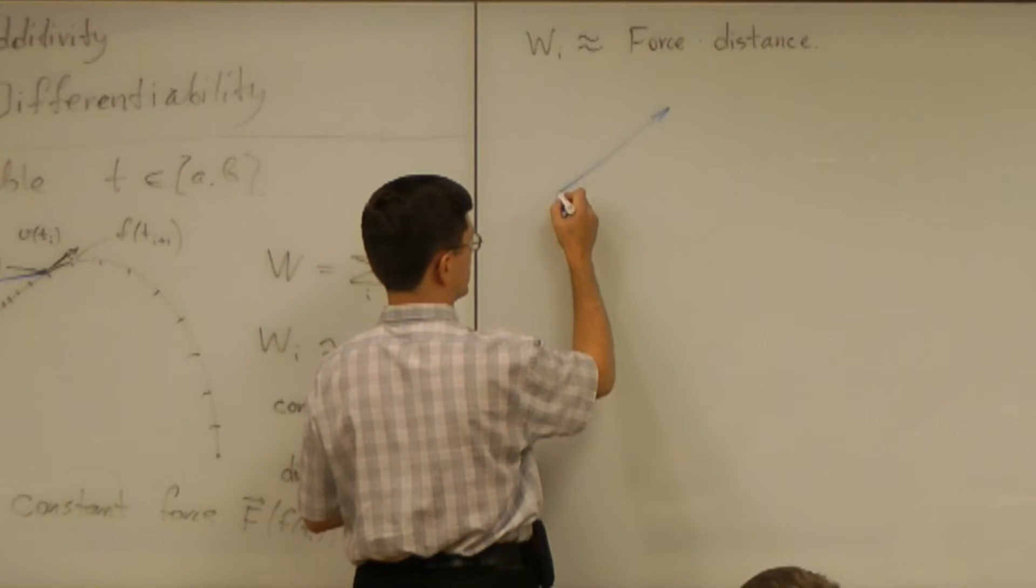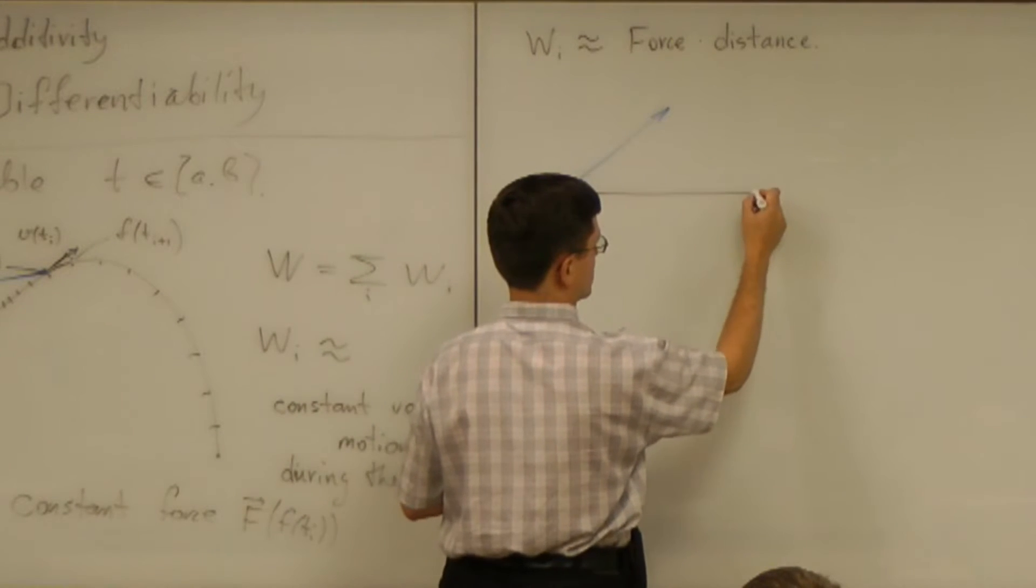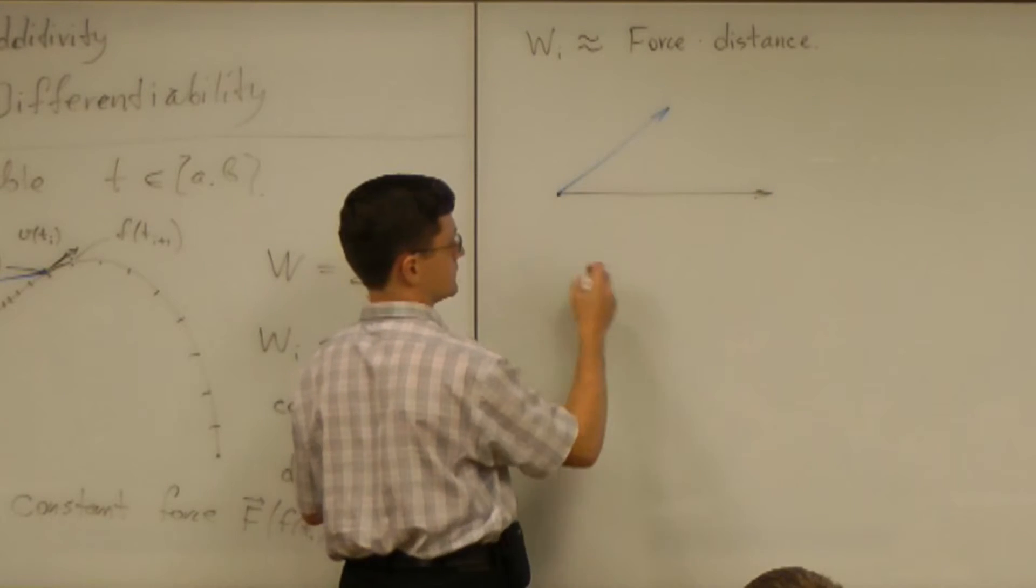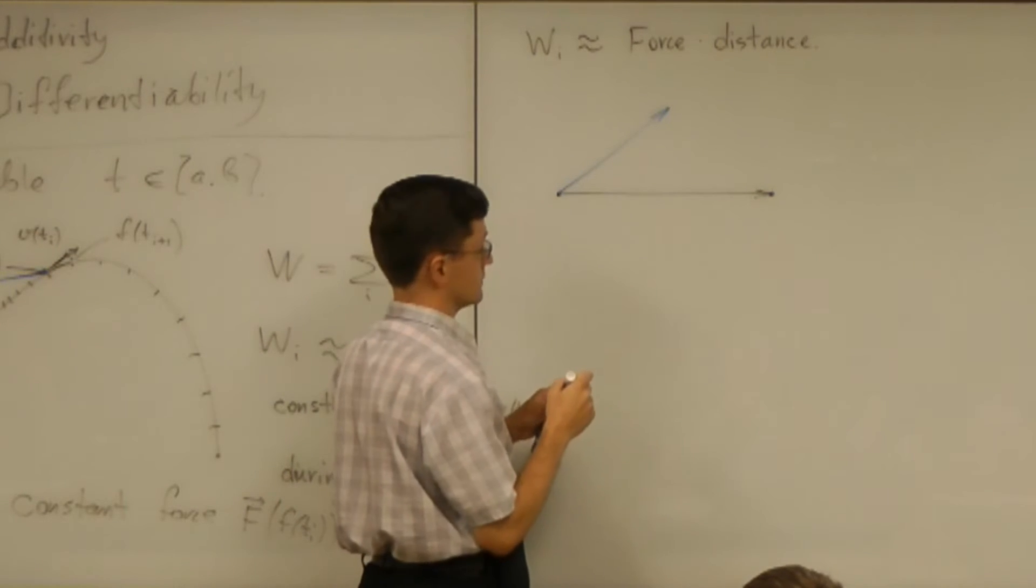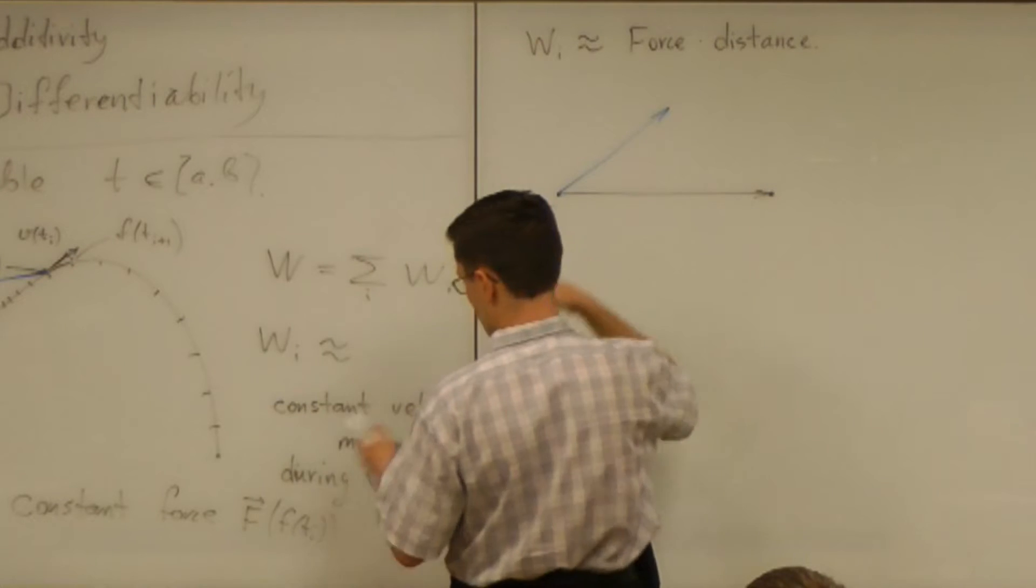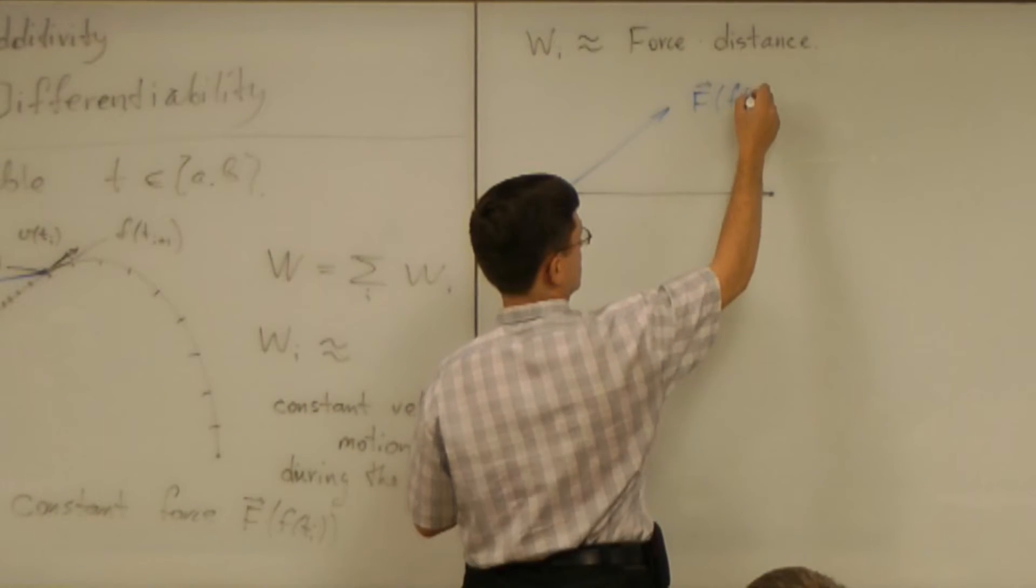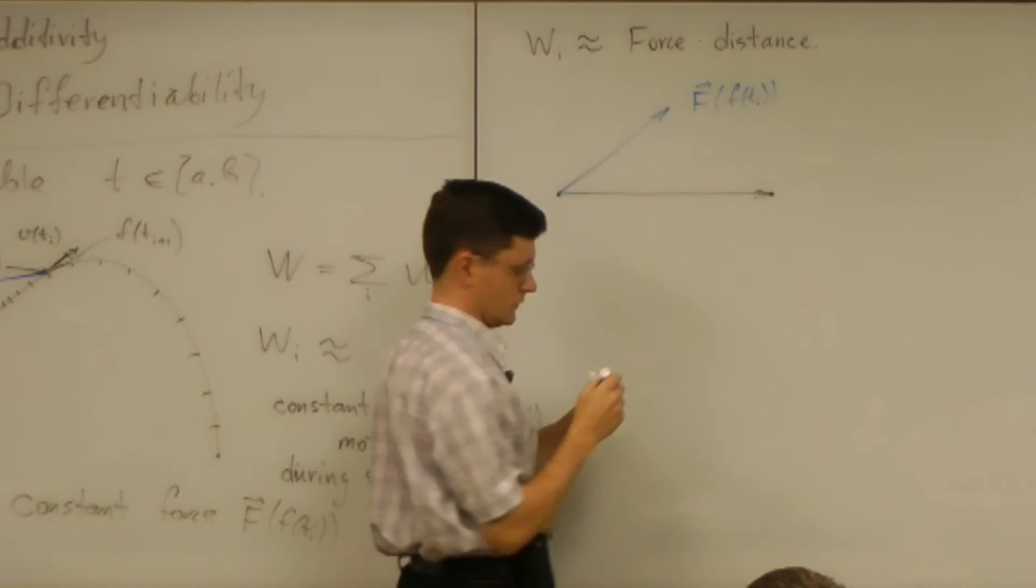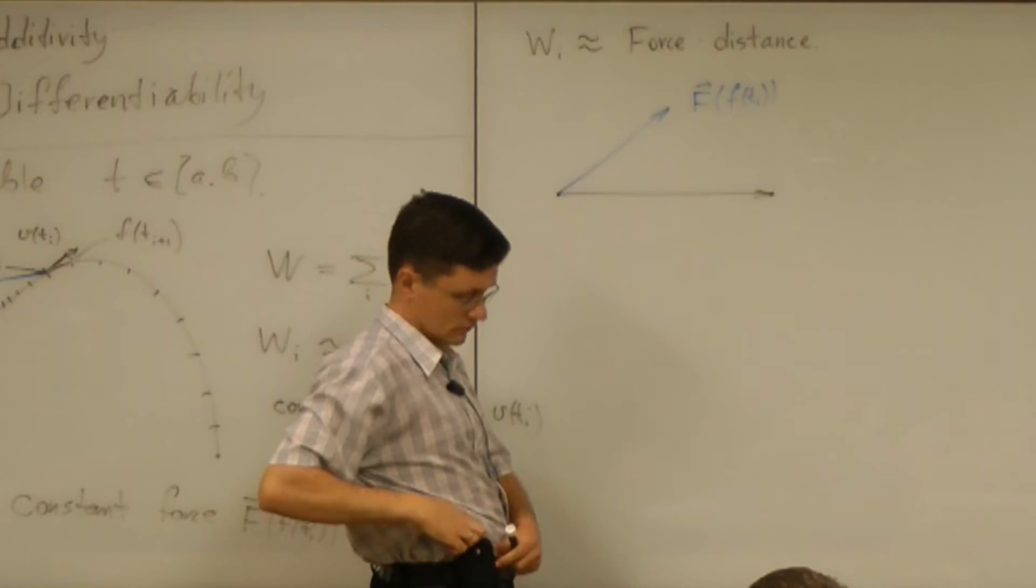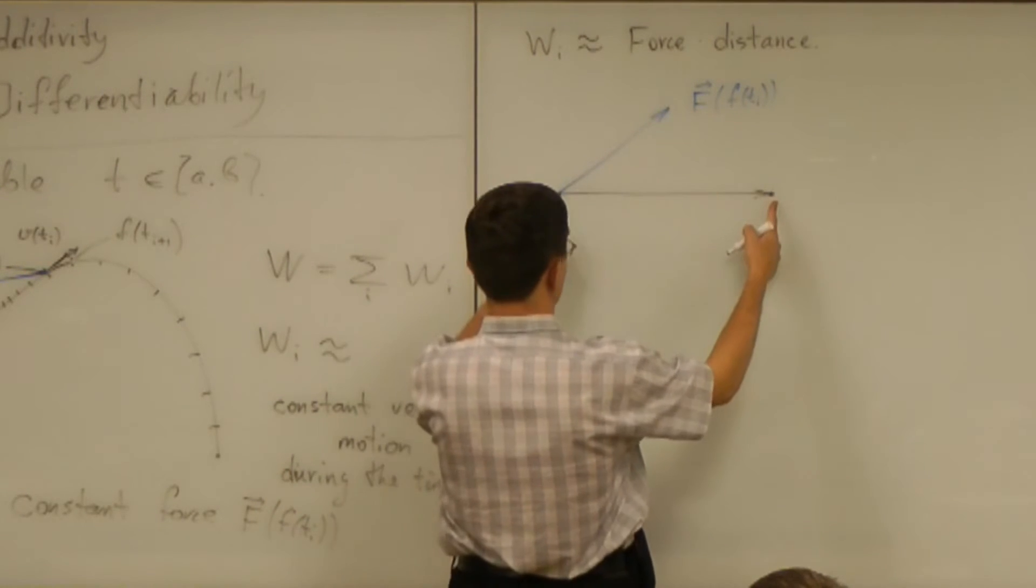So if you have the force like that, and this is the displacement vector. Alright. So the force is known. It is F of position with point Ti. Well, what's the displacement?